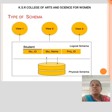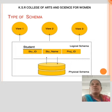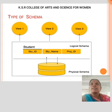A database schema can be divided broadly into two categories: Physical Schema and Logical Schema. Physical Schema pertains to the actual storage of data and its form of storage like files, indices, etc. It defines how the data will be stored in the secondary storage. Logical Database Schema defines all the logical constraints that need to be applied on the data stored. It defines tables, views, and integrity constraints.